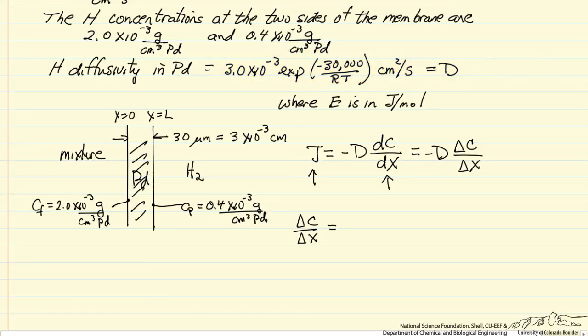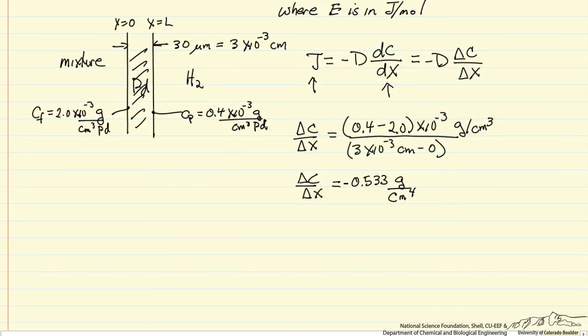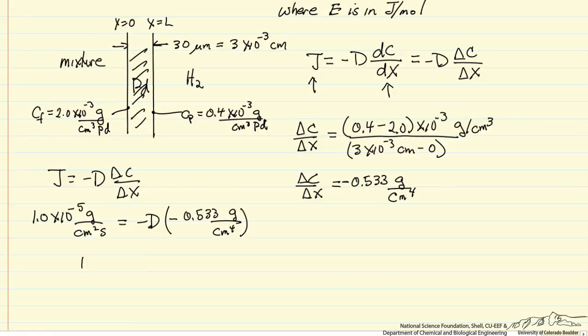So we can calculate delta C over delta x. So now to have delta C over delta x, I can write the flux, or given the flux, I'm substituting in the values, so I can solve for my diffusivity.